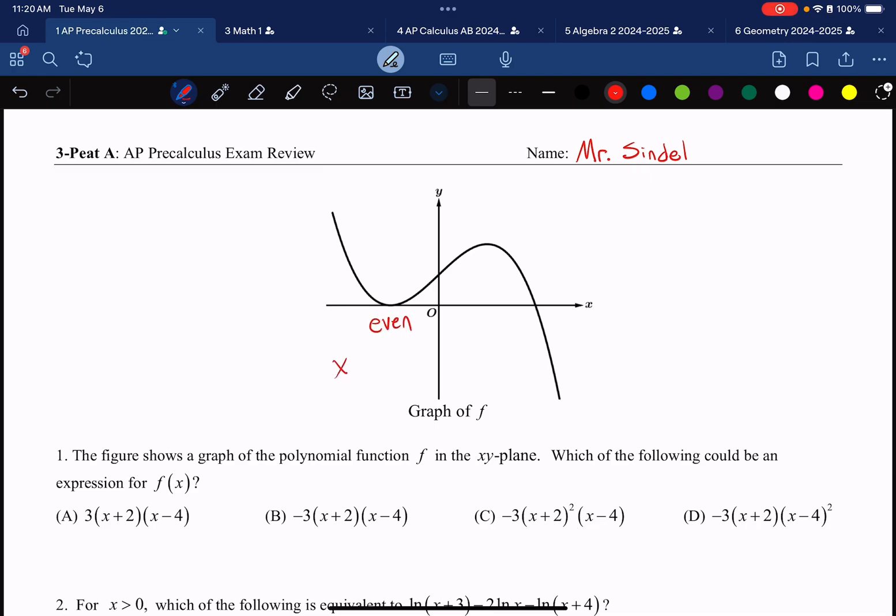Whenever I have something like an x to the power of 2 or an x to the power of 4, those indicate that we turn around. And on this second x-intercept, we go through the x-axis, meaning that we have some sort of odd power, like an x or an x to the power of 3.